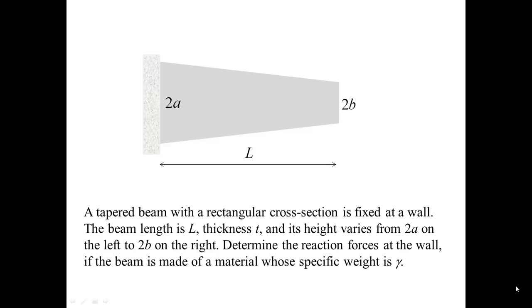In this problem, a tapered beam with a rectangular cross-section is fixed at a wall. The beam length is L, thickness is T, and the height of the beam changes from 2A on the left to 2B on the right.